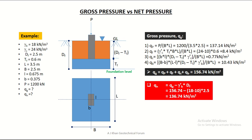The net pressure equals gross pressure minus the effective overburden pressure: 156.74 − (18 − 10) × 2.5 = 136 kN/m². Always remember: net pressure will always be less than gross pressure — do not make that mistake in real practice or in exams.